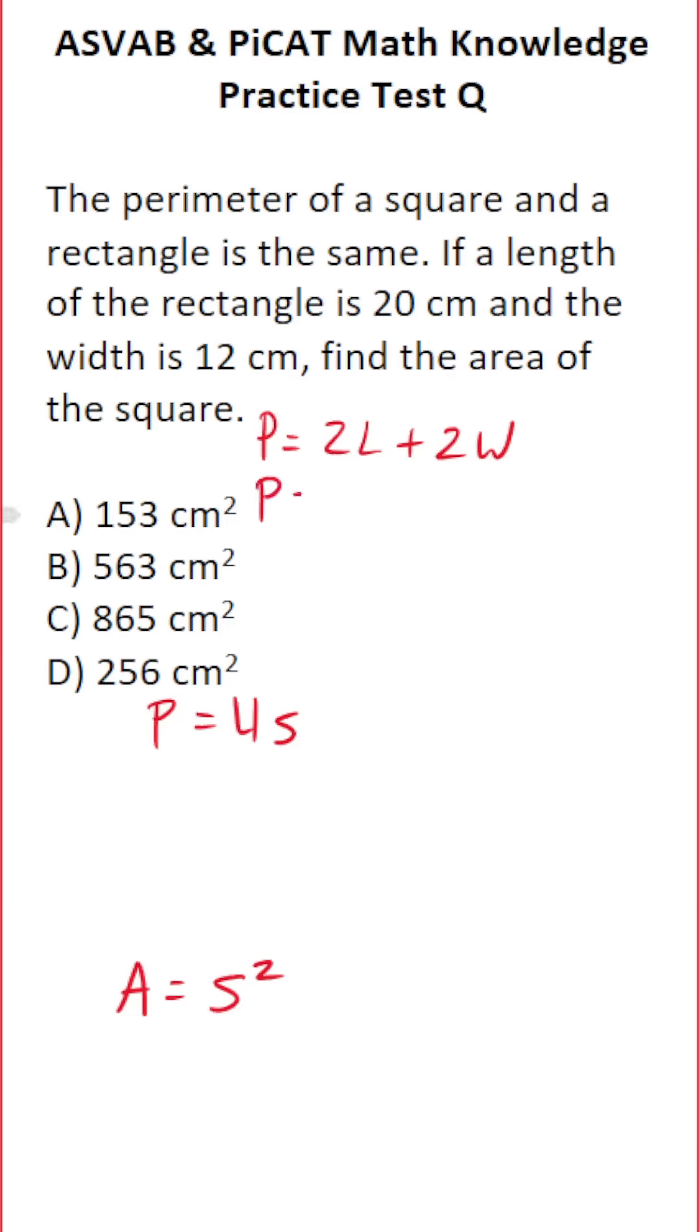Let's get started. The rectangle has a length of 20 and a width of 12. So its perimeter is 20 times 2, which is 40, plus 12 times 2, which is 24. 40 plus 24 equals 64.